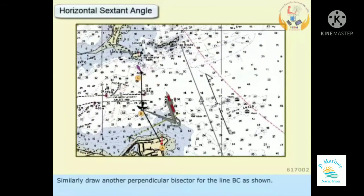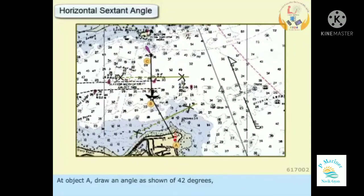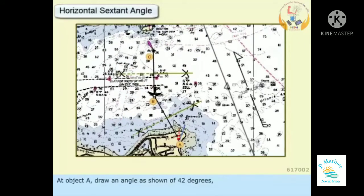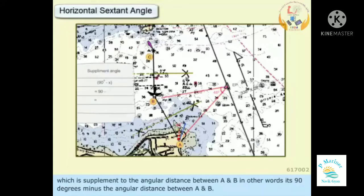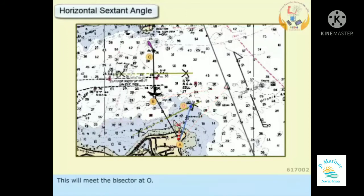Similarly, draw another perpendicular bisector for the line BC. At object A, draw an angle of 42 degrees, which is supplementary to the angular distance between A and B. In other words, it's 90 degrees minus the angular distance between A and B. This will meet the bisector at O.